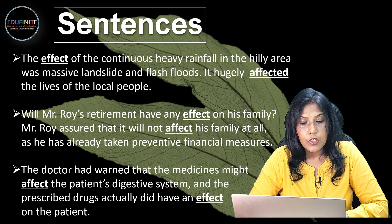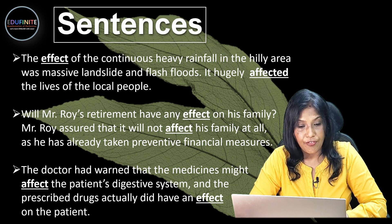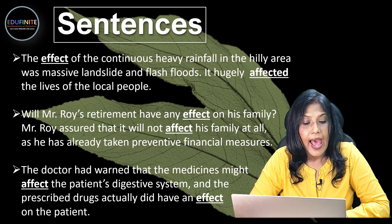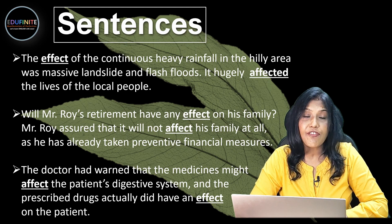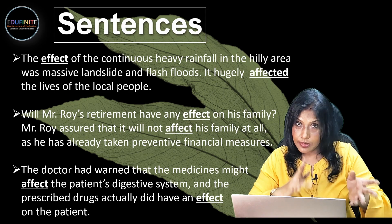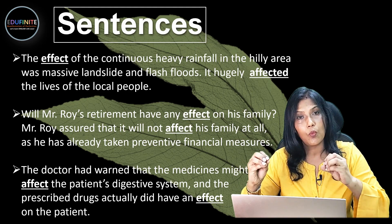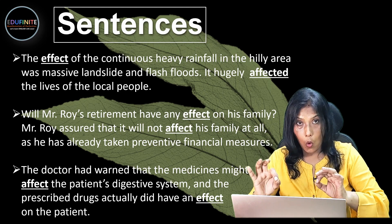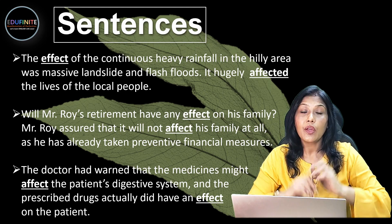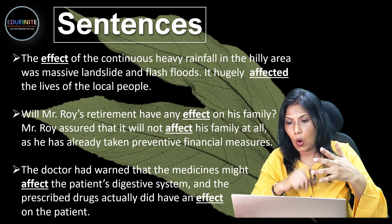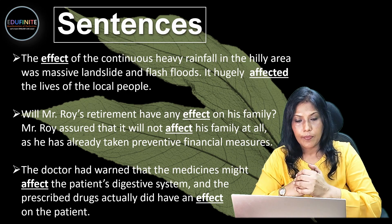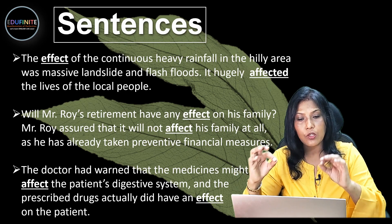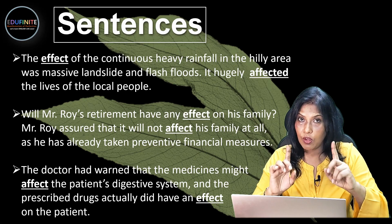'The doctor had warned that the medicines might AFFECT the patient's digestive system' — that means damage the digestive system — 'and the prescribed drugs actually did have an EFFECT on the patient.' So yes, the result was there; the effect was there on the patient. Notice: EFFECT being a noun, it can follow words like any, on, into, take, etc. But AFFECT can't, because that's the verb — you cannot say 'affect on'; it's 'effect on the family' or 'effect on the patient.'